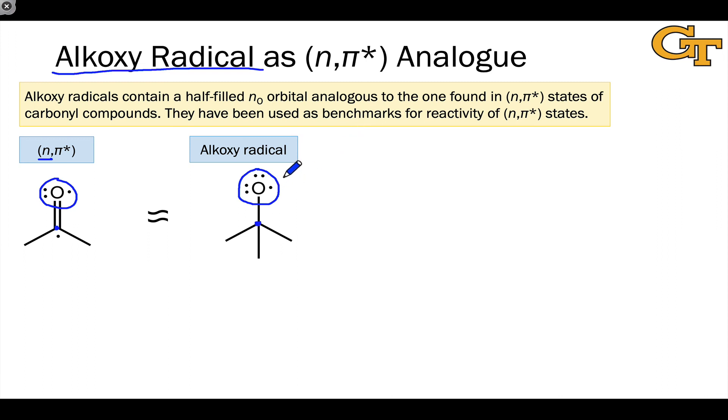For example, for hydrogen abstraction, the rate constant for hydrogen abstraction by an n,π* state should be at least as big, if not bigger, than the corresponding rate constant for the alkoxy radical.